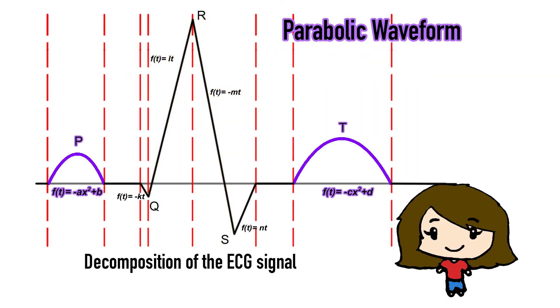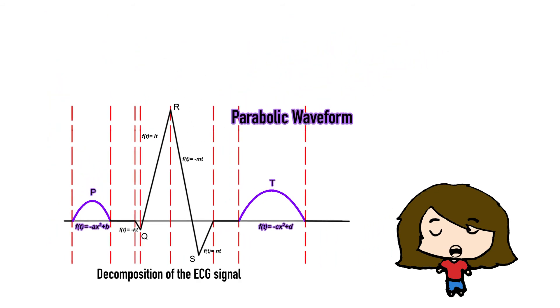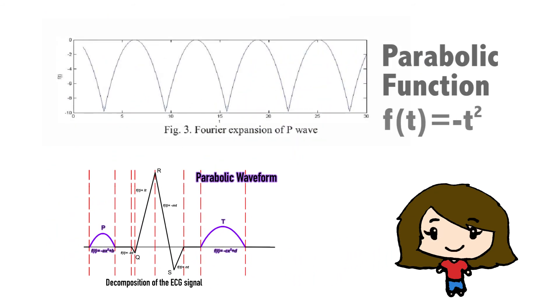The P wave and T wave can be approximated using a parabolic function, that is f(t) equals negative t squared, and we make it a periodical function. Hence, we apply Fourier series to get the approximation of the waveform.